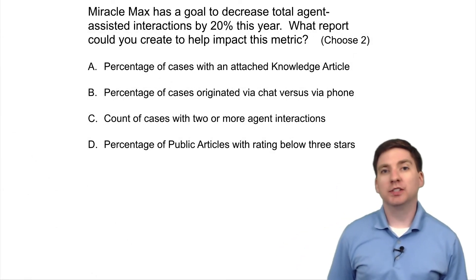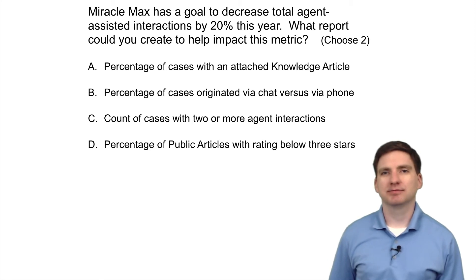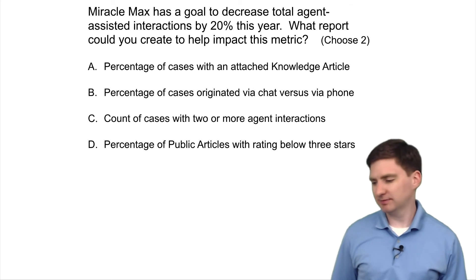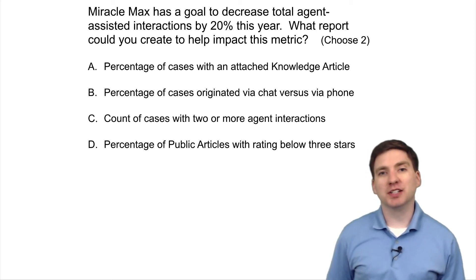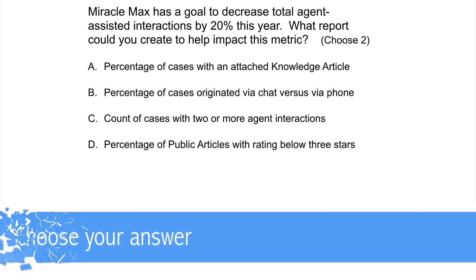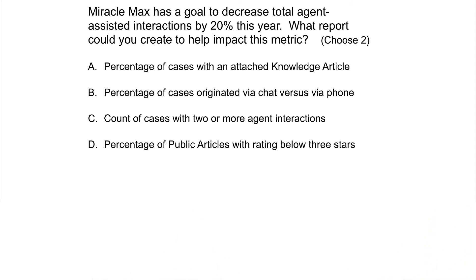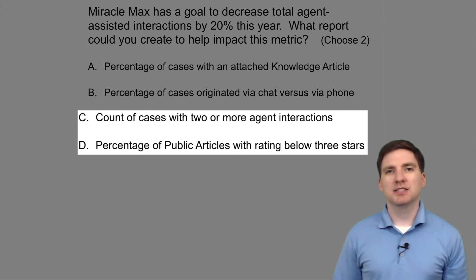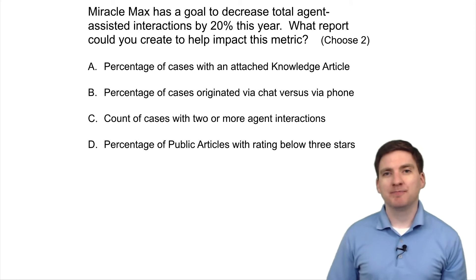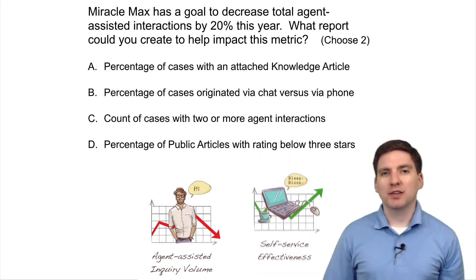Miracle Max has a goal to decrease total agent-assisted interactions by 20% this year. What report could you create to help impact this metric? A: Percentage of cases with an attached knowledge article. B: Percentage of cases originated via chat versus via phone. C: Count of cases with two or more agent interactions. D: Percentage of public articles with a rating below three stars.